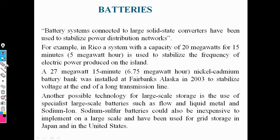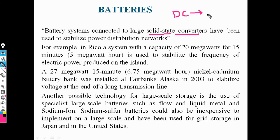Batteries are connected to the grid to stabilize the power distribution network. In batteries we need a converter called a solid-state converter, which converts DC to AC. For example, the RECO system has a capacity of 20 MW for 15 minutes, and the power of the RECO system in one hour is 5 MW.